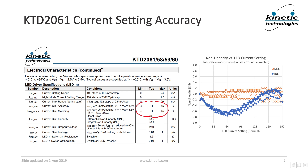If you are not familiar with current regulator INL and DNL, let me tell you, the performance here is very good, especially because the lowest current settings maintain very high accuracy. Many competing LED driver ICs have very poor accuracy at their low brightness settings and don't show this in their datasheets.